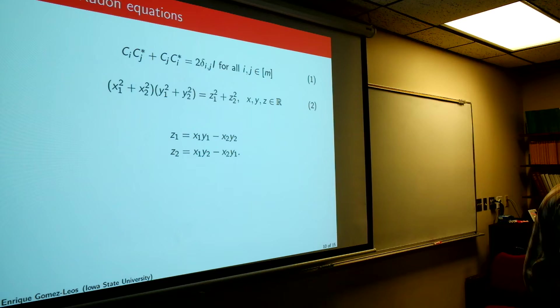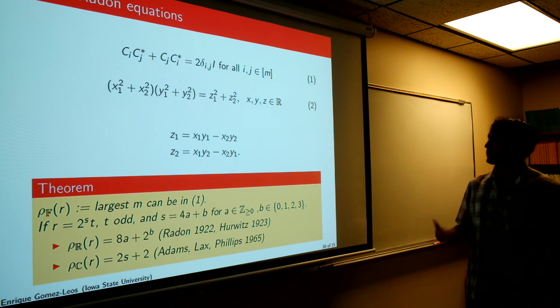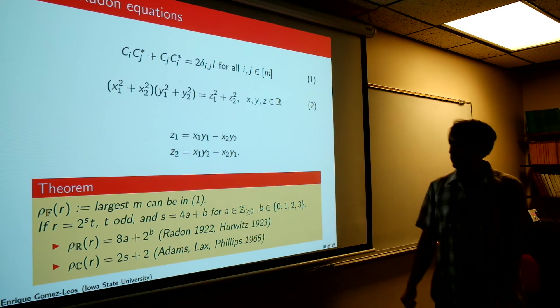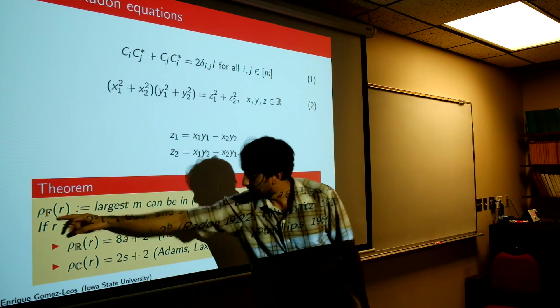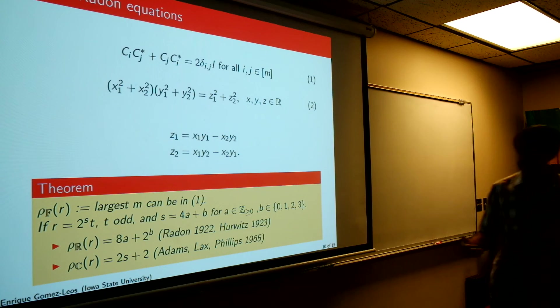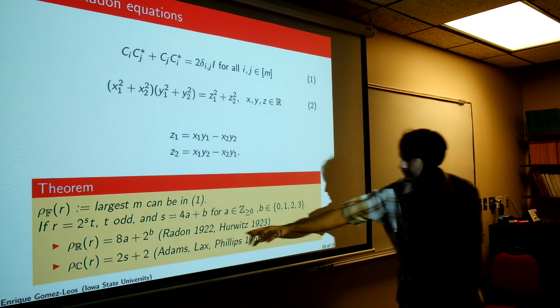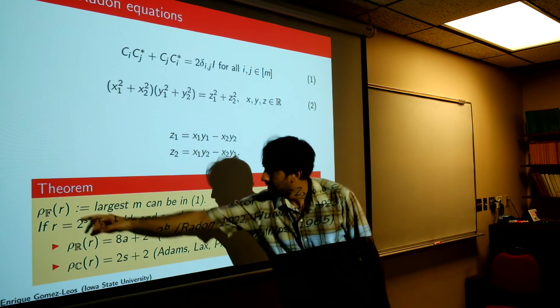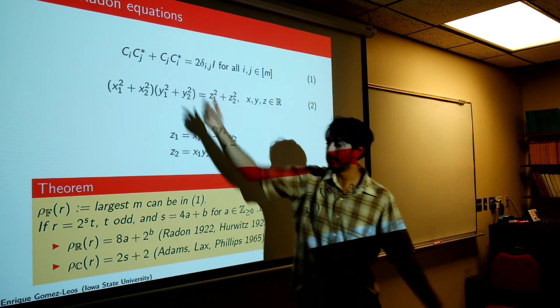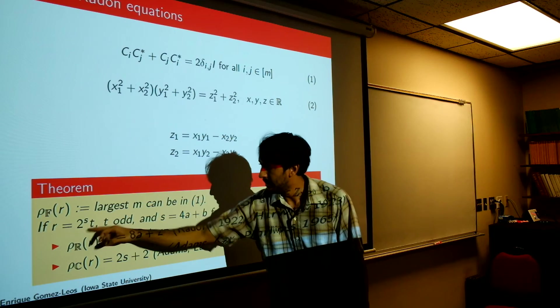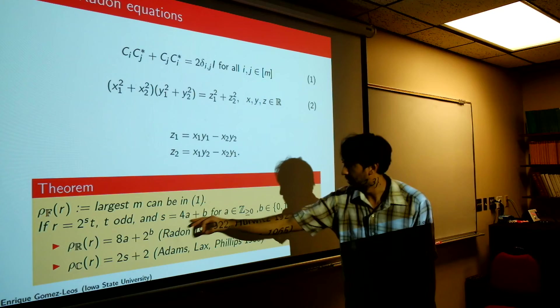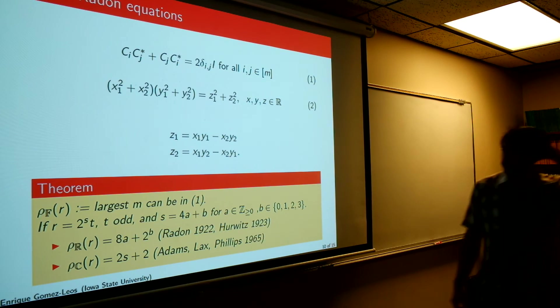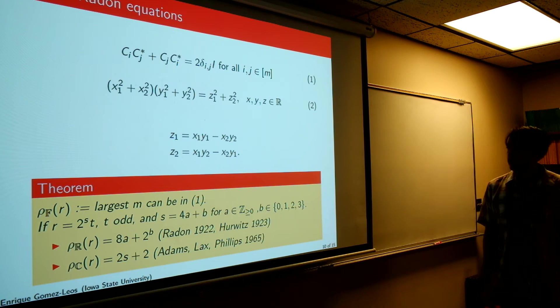So it's a surprising relationship. And what we're concerned with is when's the largest m we can take m to be. So we're concerned with finding the highest number of m's possible. So this number, we call it rho_r, and we have denoted a subscript f because it depends on the reals or the complex. So it was shown in 1923 by Radon-Hurwitz, each independently, that the most you can do is 8a plus 2b. What are these numbers? Well, take r, so r was the dimension of these matrices, they're r by r matrices. So take r, factor it like this, take out the even part times the odd part, and write s as 4a plus b, so modulo 4, and write down 8a plus 2b, that's the most number you can do. And similarly, there's a result for the complex numbers right there as well.